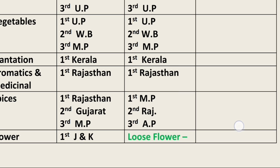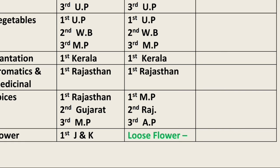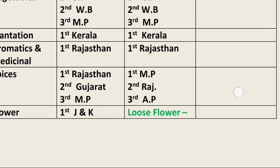For spices, the state with maximum area under total spices is Rajasthan in first place, Gujarat in second place, and Madhya Pradesh (MP) in third place. However, for maximum production of spices, MP holds first place, Rajasthan second, and Andhra Pradesh third.